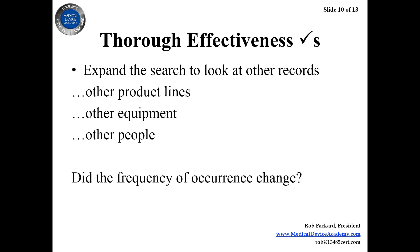To do a thorough effectiveness check — for example when re-auditing a process — you need to expand your search to look at other records, just as you would during root cause analysis. You're going to look at other product lines, other equipment, and other people. If you have one production line making a certain type of knee implant and you implement the corrective action there, but the same process exists on another line making a different knee implant, your CAPA won't be effective if you didn't implement the same corrective actions on the other line. A good effectiveness check looks beyond where the problem originally occurred.